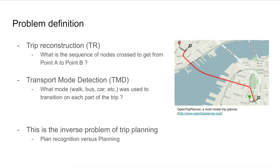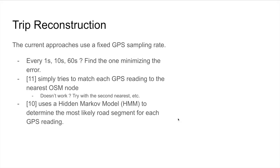Trip reconstruction: Current approaches basically only use a fixed GPS sampling rate. They will have a mobile app that will sample the GPS at a fixed rate, which can be 1 second, 10 seconds, 60 seconds. They'll try to find the one that minimizes the error for their algorithms, and once they have a GPS trace...